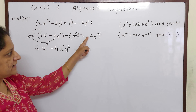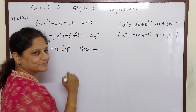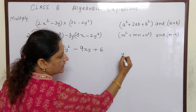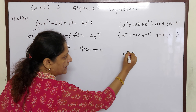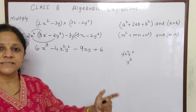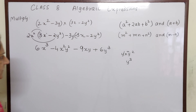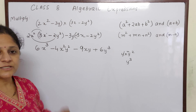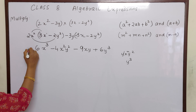Now this is minus, it will become plus. Minus into minus is plus. 3 × 2 = 6, and y into y² — the power is 1, base is same, so we add the powers. a^m × a^n = a^(m+n). 1 + 2 = 3, so 6y³. If you see children, this is x³, this is x²y², this is xy, and this is y³. There are no like terms, so our final answer is this one.